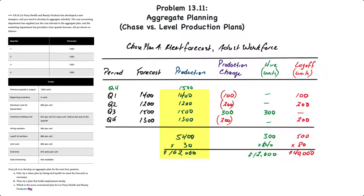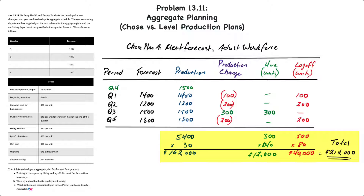The total costs of the chase plan are: regular production of 5400 units at $30 per unit equals $162,000. 300 equivalent units of hires at $40 per unit totals $12,000. The equivalent of 500 units were laid off over the four quarters at $80 per unit for a total layoff cost of $40,000. Therefore the total cost of this chase plan is $214,000.